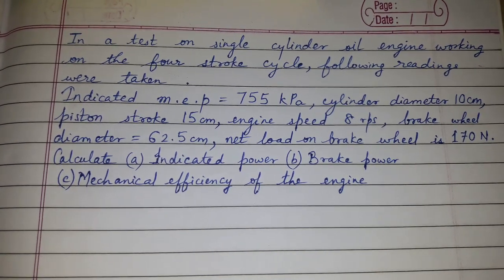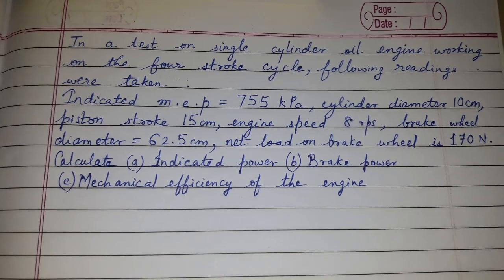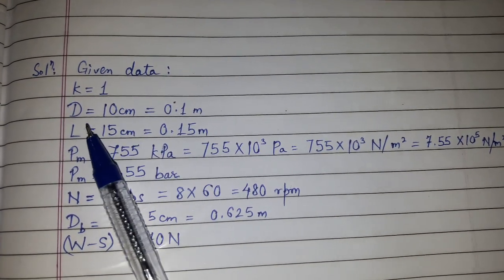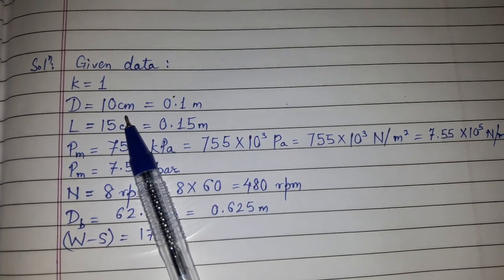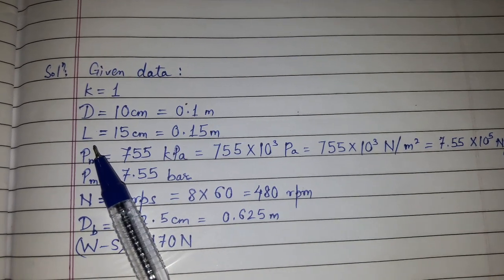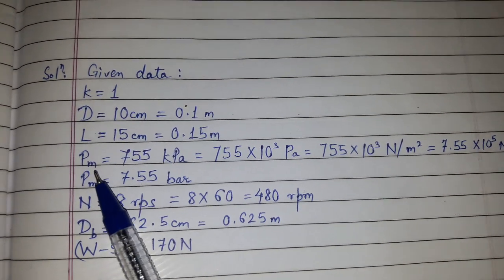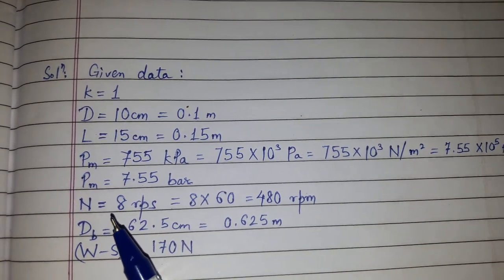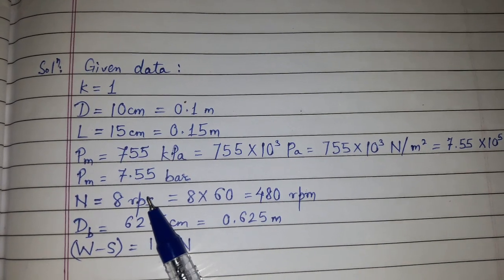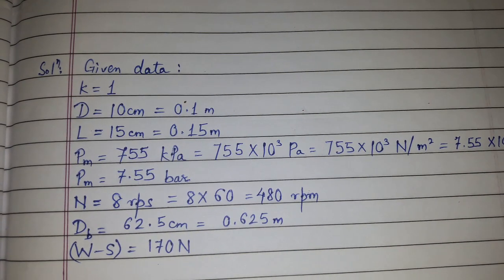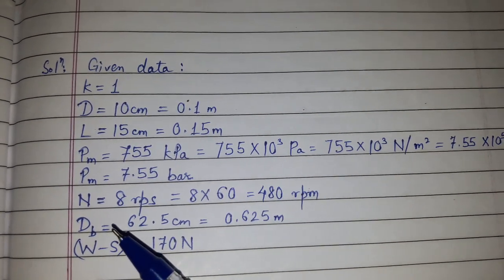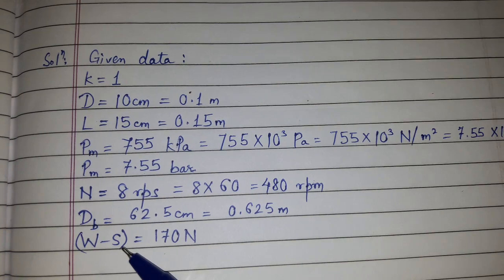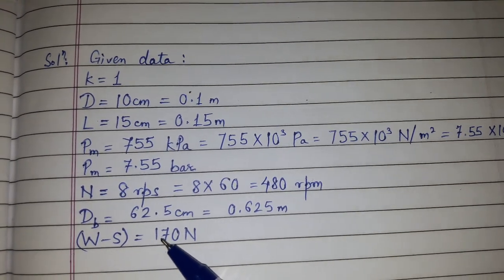The data is provided in different units, so we need to convert them. k equals 1 (single cylinder). D = 10 cm = 0.1 m. L = 15 cm = 0.15 m. PM = 755 kPa = 7.55 bar. Speed = 8 RPS × 60 = 480 RPM. Brake wheel diameter dB = 62.5 cm = 0.625 m. Net load (W minus S) = 170 N.